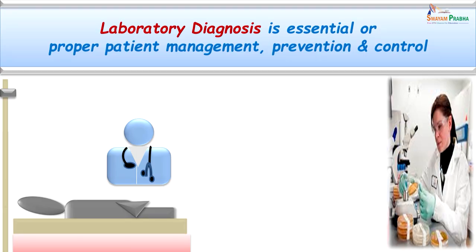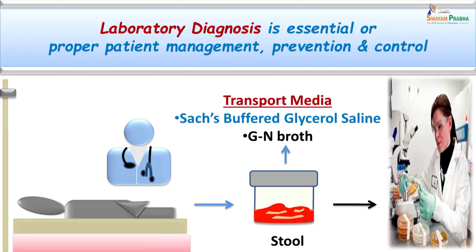Laboratory diagnosis is essential to confirm the etiology — whether it is bacillary or parasitic dysentery — so we can target the pathogen specifically and take measures for control and prevention. We collected a stool sample from the patient and sent it to the laboratory. If a delay in transfer to the microbiology laboratory is expected, it is essential to collect the specimen in transport media. The transport medium commonly used when bacillary dysentery is suspected is either GN broth or Sachs buffered glycerol saline.